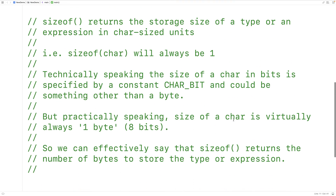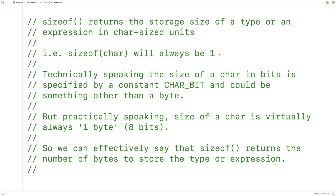Now there's something else we should know about sizeof. Technically speaking, sizeof doesn't return the number of bytes to store a type or expression — it returns the number of char-sized units. In other words, how many chars would it take to store that type or expression. The size of a char will always be 1 because the char is the actual unit that sizeof returns its result in. Technically the size of a char in bits is specified by a constant CHAR_BIT, and it could be something other than a byte where a byte is 8 bits.